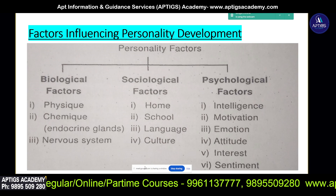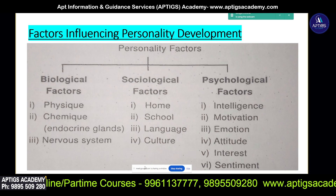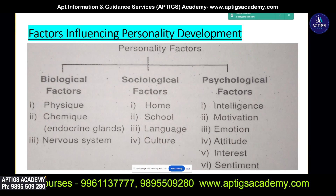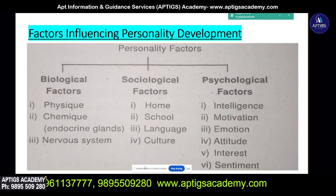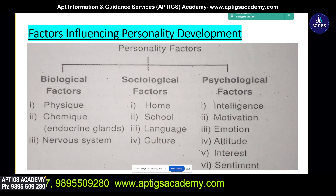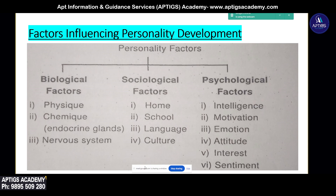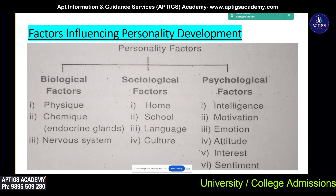He is a counselor, and he is a teacher. If you have any questions about your family, then you will have personality factors involved. There are also psychological factors. Psychological factors include intelligence, motivations, emotional stability, attitude, interests, and sentiments.